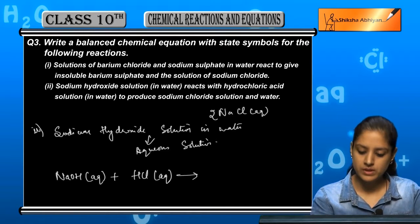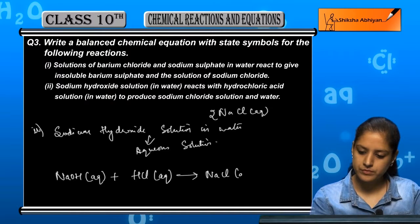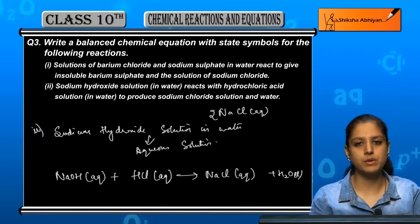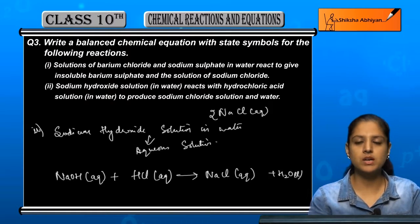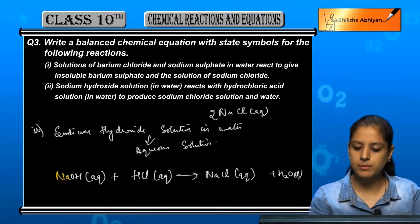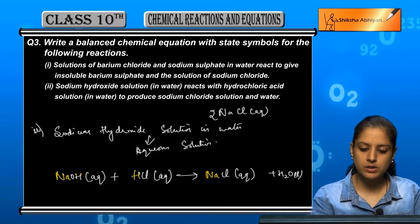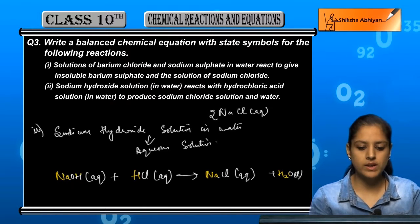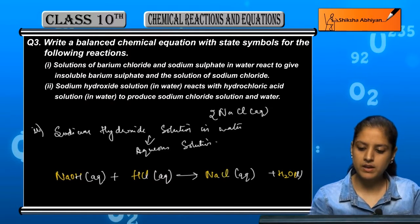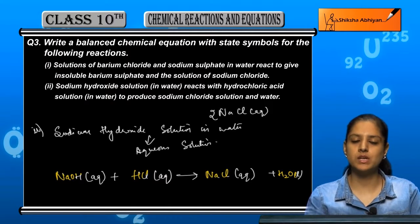NaOH aqueous plus HCl aqueous gives NaCl aqueous plus H₂O liquid. Let us check if it is balanced: Na is 1 on both sides, O is 1 on both sides, H is 2 on left and 2 on right, Cl is 1 on both sides. So it is a balanced chemical equation. This concludes question number 3.